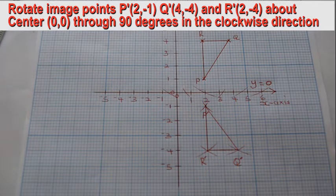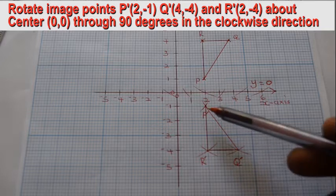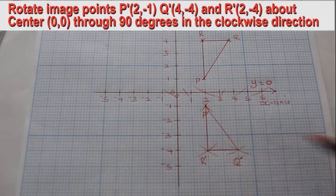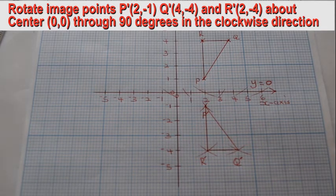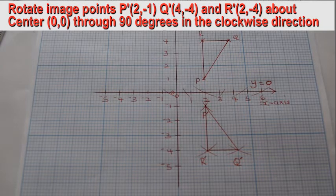Rotate the image across the image P' to R' about the center through 90 degrees in the clockwise direction.